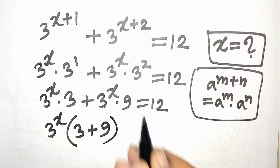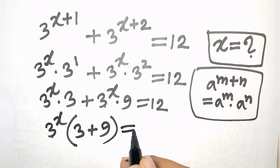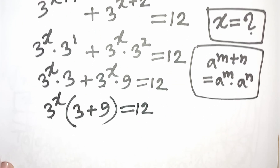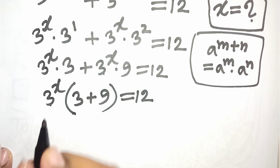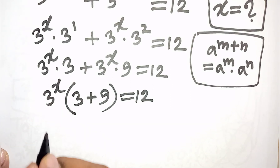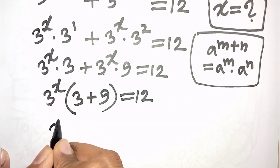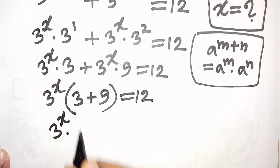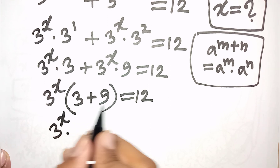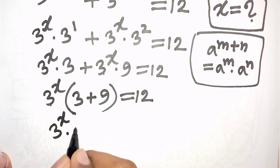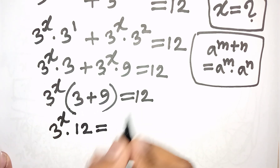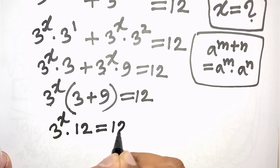So we have 3 power x times open bracket 3 plus 9, that means 12, close bracket is equal to 12.